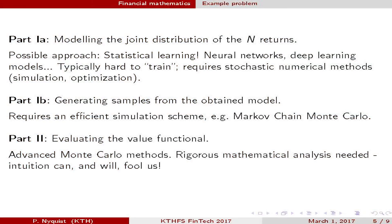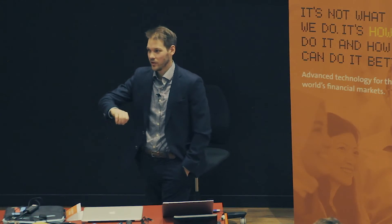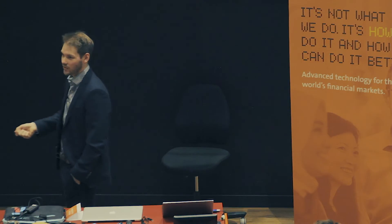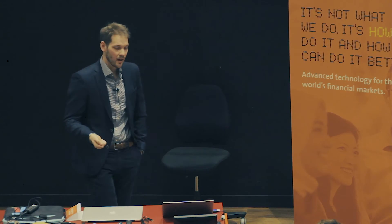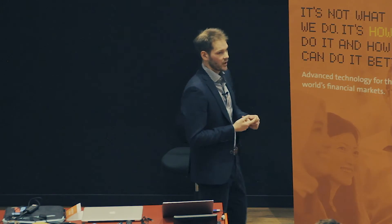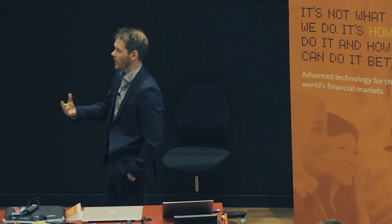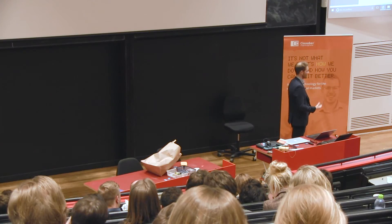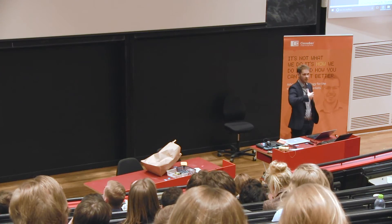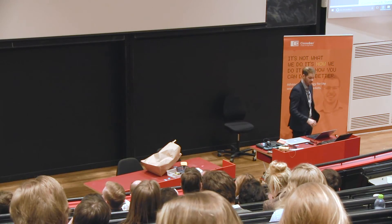Advanced Monte Carlo methods require rigorous mathematical analysis, and I cannot emphasize this enough — intuition can and will trick you. You come up with a scheme that works in a certain setting, use it everywhere, and then run into a setting where it no longer works. The most dangerous situation is where you think it's working and have no indication that it's not. Sometimes you'll see it's not converging or acting crazy, and you can stop. But what if that doesn't show up? Can we have diagnostics that tell us whether these things are working or not? That's also something we're working very actively on — and again, that's stochastic numerical methods.